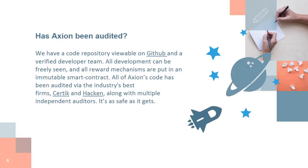Has Axion been audited? We have a code repository viewable on GitHub and a verified developer team. All development can be freely seen, and all reward mechanisms are put in an immutable smart contract. All of Axion's code has been audited via the industry's best firms, Certique and Hacken, along with multiple independent auditors. It's as safe as it gets.